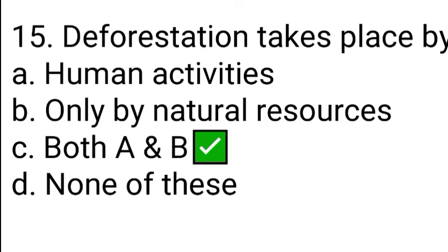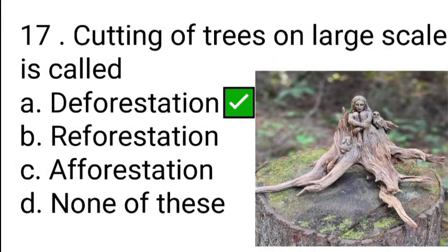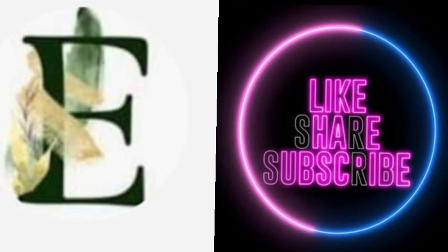Deforestation takes place by human activities, by natural causes, or both. Deforestation means to cut or harm more and more trees. The growing of more and more plants is called afforestation. Cutting of trees on a large scale is called deforestation.